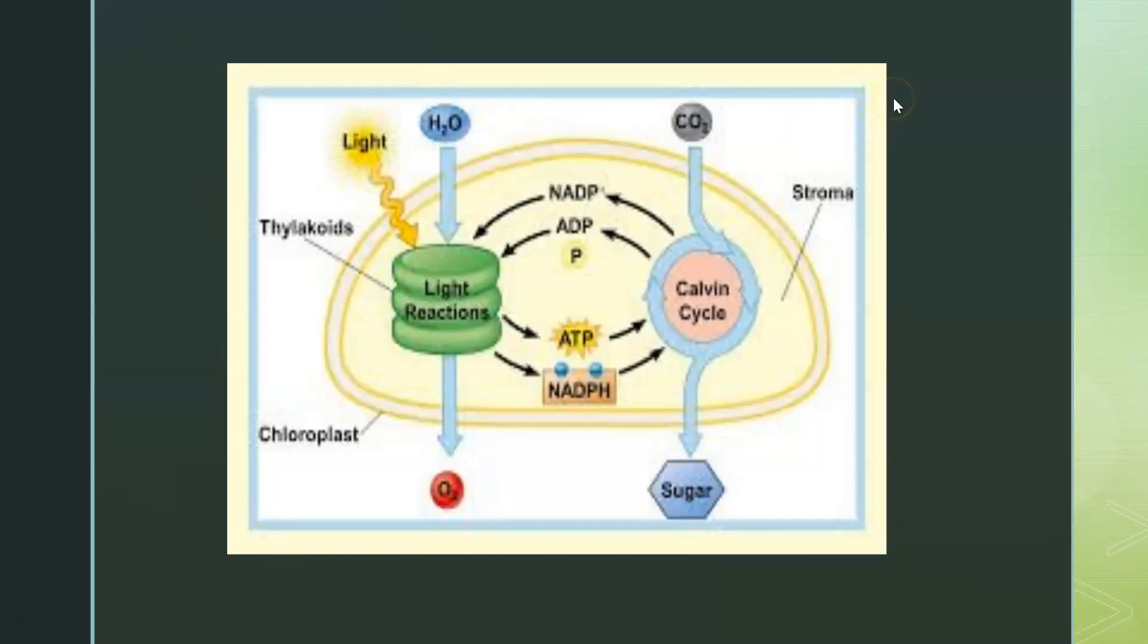So we're going to go through this, and we'll be all done. This is the chloroplast. This is the thylakoid. Okay, and this is the Calvin cycle, and this is the stroma. So what happens? Here comes our water and our light going into the thylakoid. Guess what that's called? The light reactions.